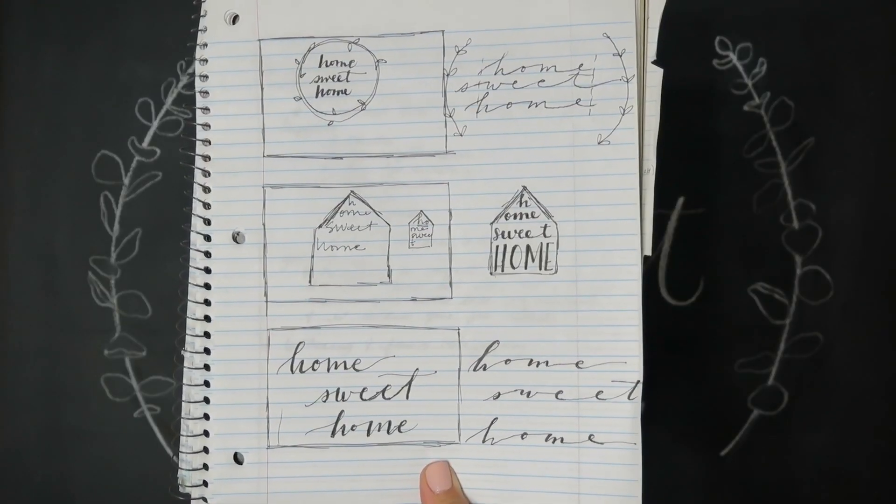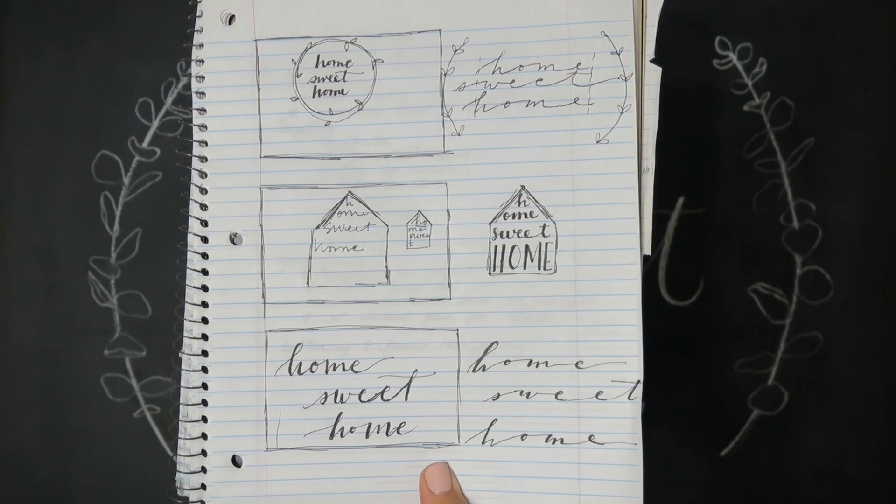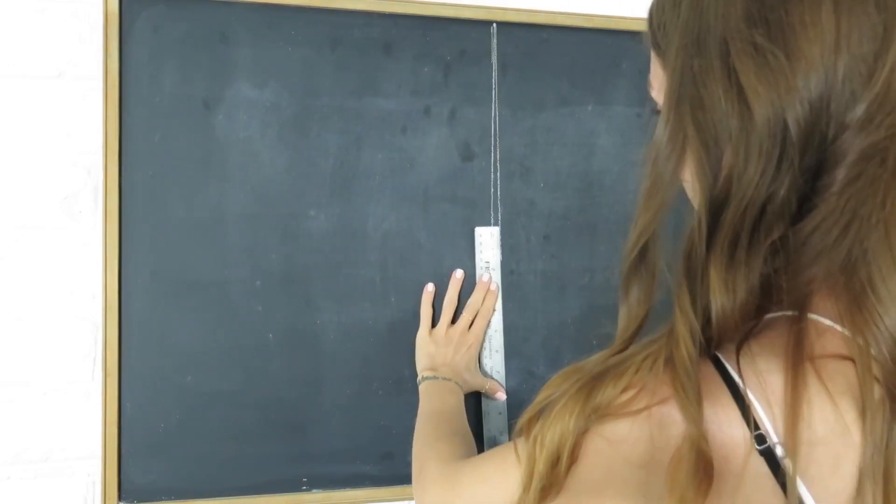The first thing you need to do is sketch. This is an absolutely imperative part of the creative process. It helps you generate, explore, and combine ideas as well as figure things out like spacing and gives you an overall direction and a goal.